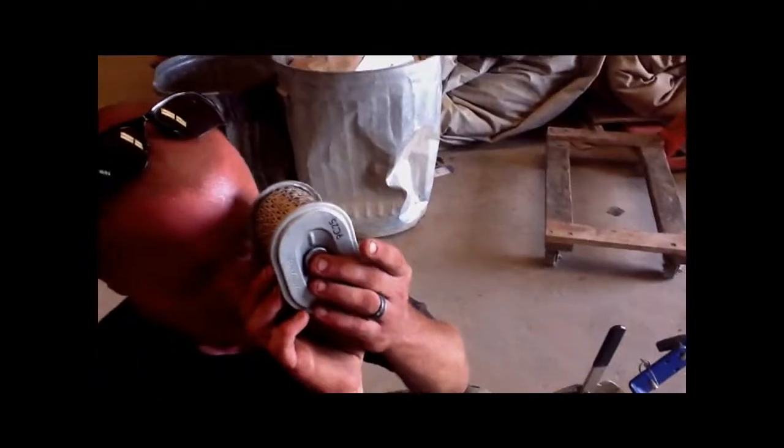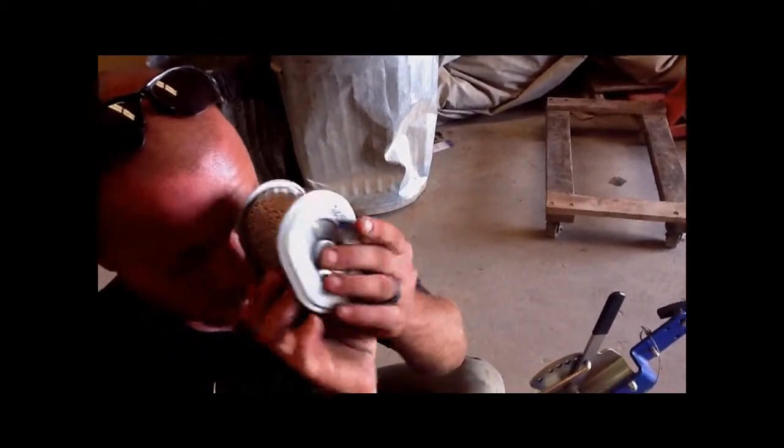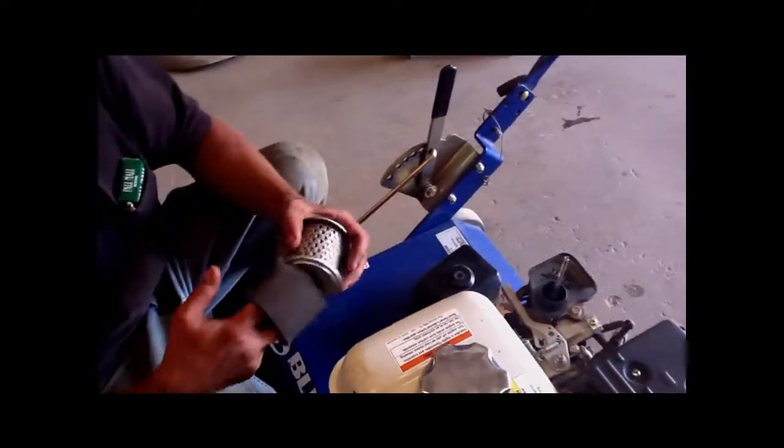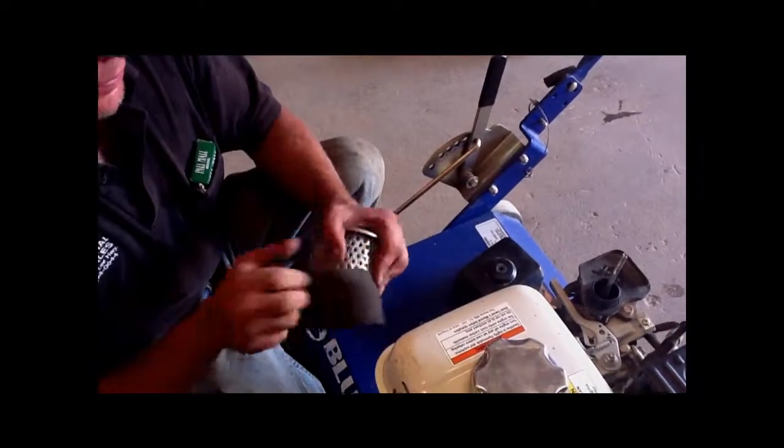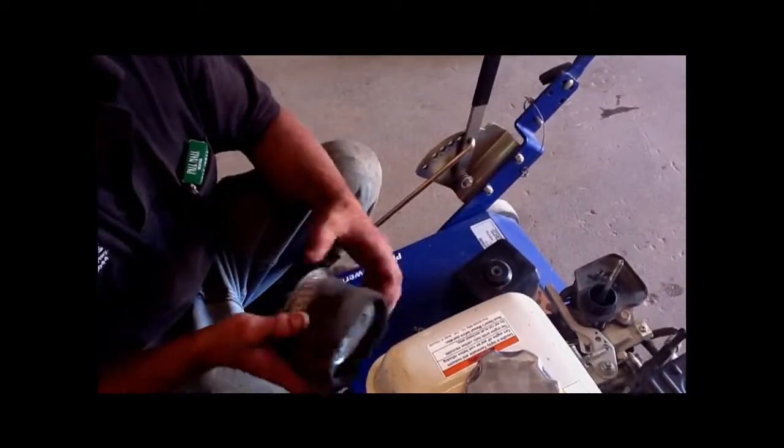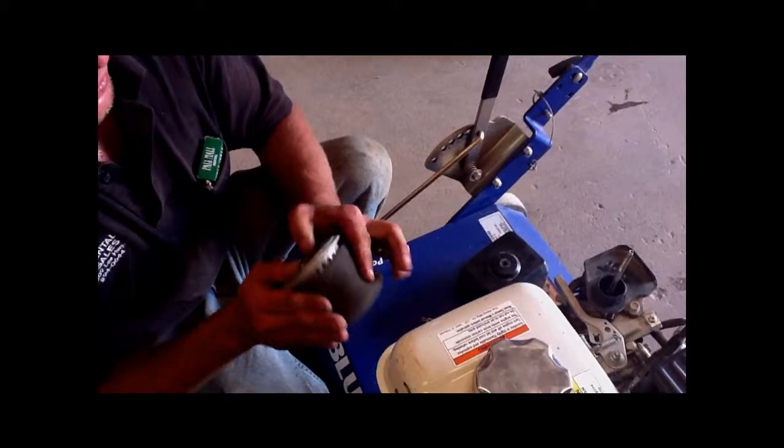Next, we're going to look to make sure we can see light through the particles or the elements in the filter. After that, we're going to put the outer jacket back on. If you can't see light through the elements, then you need to replace the filter.